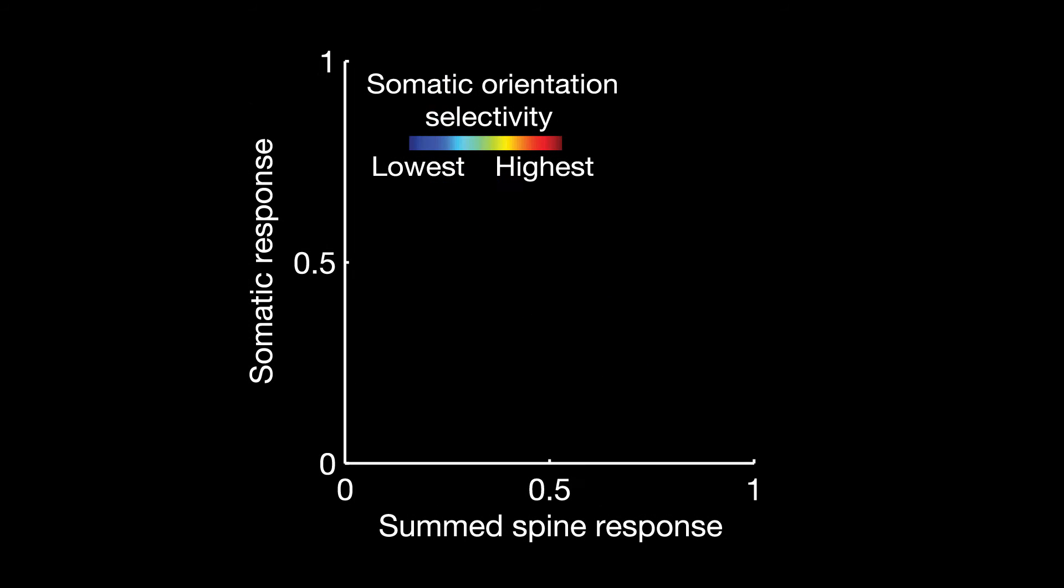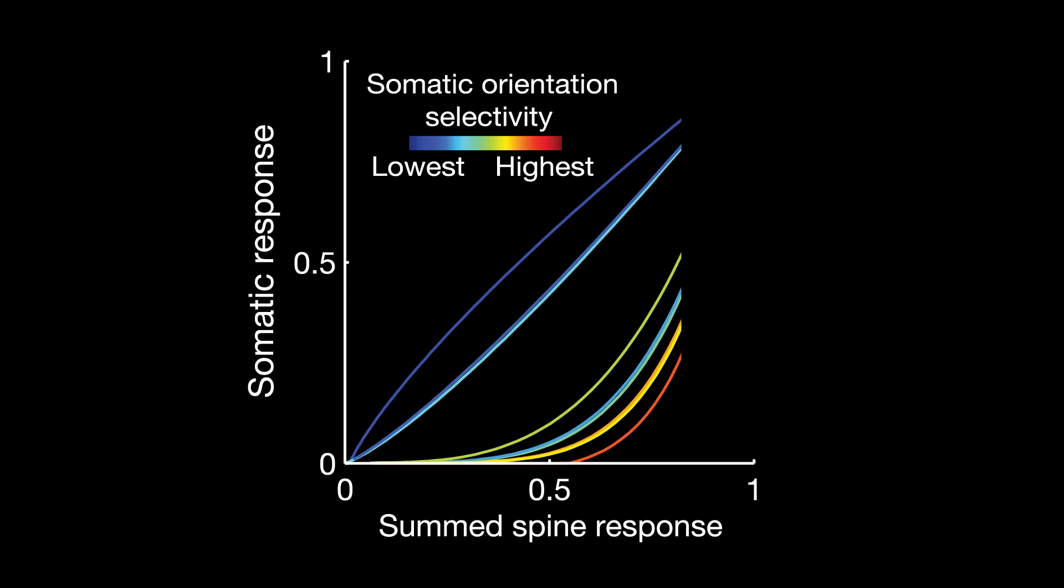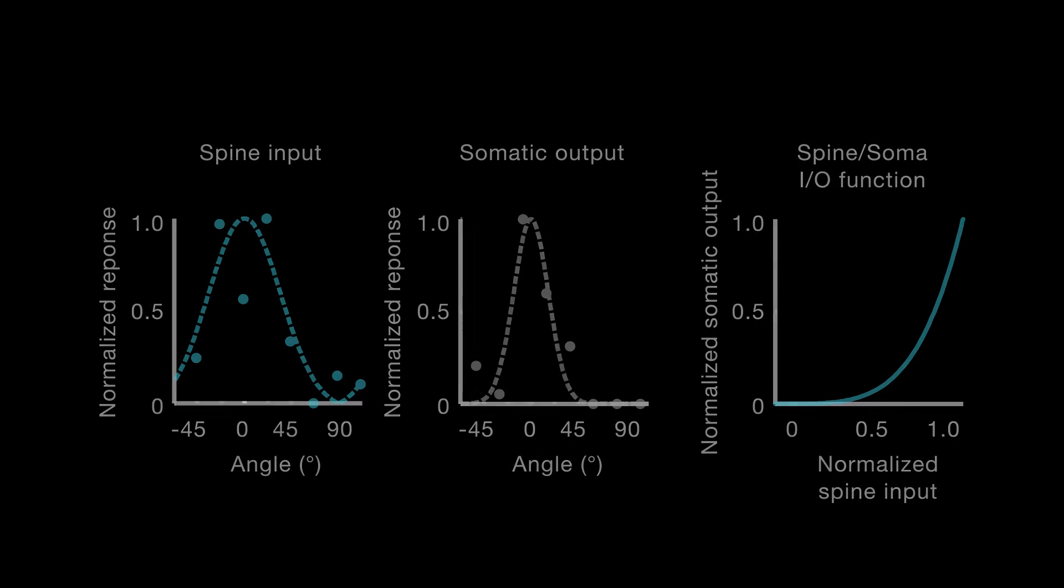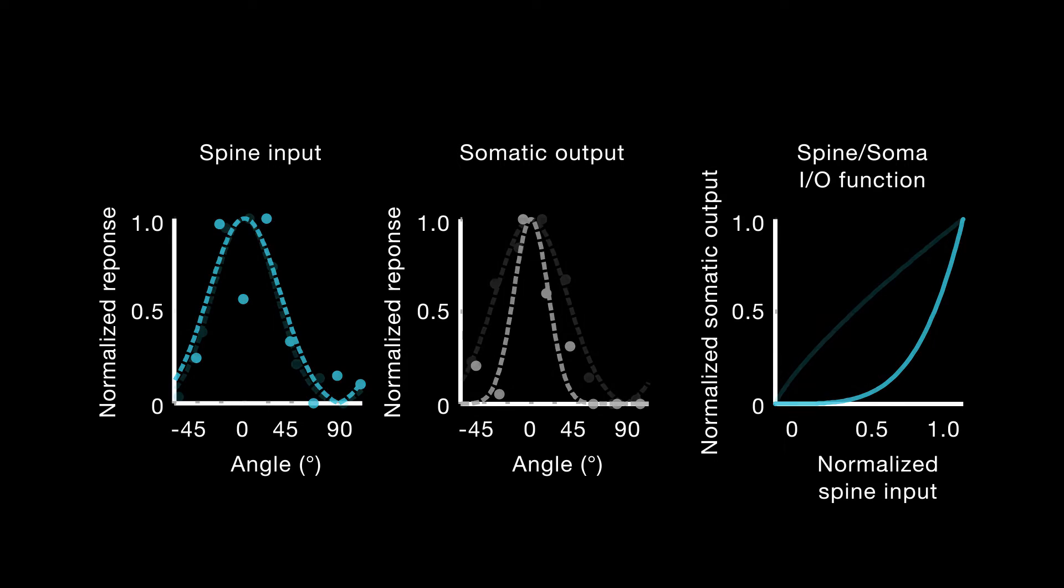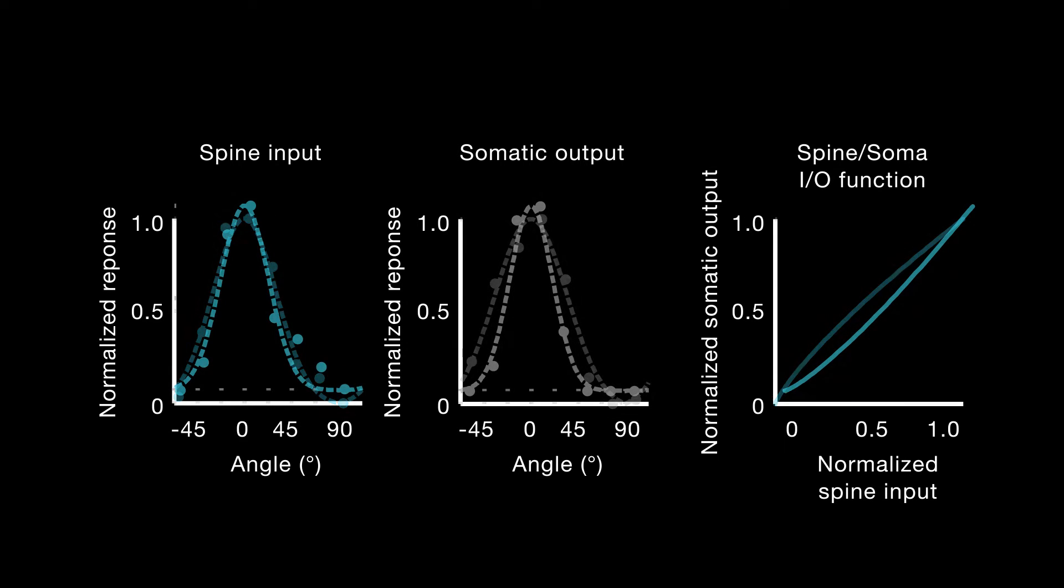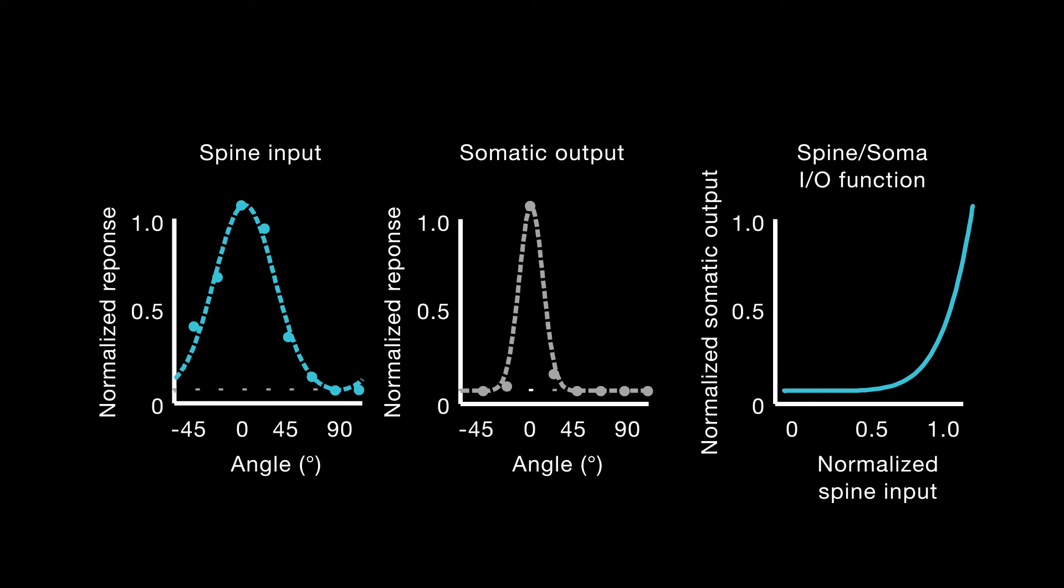Instead, selectivity was related to how a neuron's output compared with its input. Some neurons fired far fewer action potentials than expected based on the input they received, indicating that the neurons were filtering out some input. In the most extreme cases, this filtering allowed neurons to be even more selective than the sum of their individual inputs.